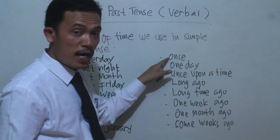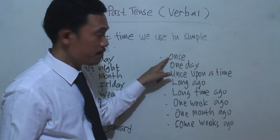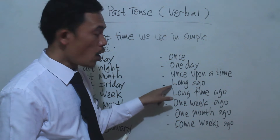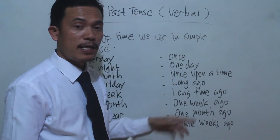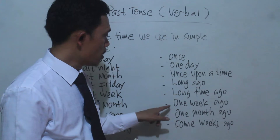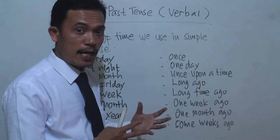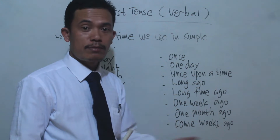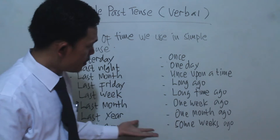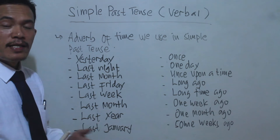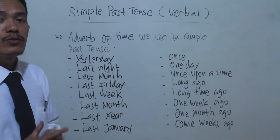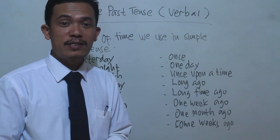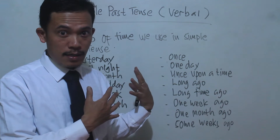Other time expressions include: 'once' (suatu hari), 'one day' (suatu hari), 'once upon a time' (pada suatu hari), 'long ago' (dahulu kala), 'long time ago' (pada jaman dahulu), 'one week ago' (satu minggu yang lalu), 'one month ago' (satu bulan yang lalu), 'some weeks ago' (beberapa minggu yang lalu). These are all time expressions used in simple past tense when expressing past events or telling a story.